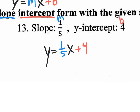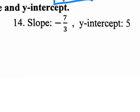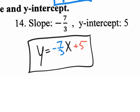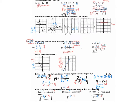Another example: y equals one-fifth x plus 4 — your m is slope, your b is your y-intercept, so you just plug in the m and the b. Let's move on to number 14. This equation will be y equals negative seven-thirds x plus 5. You see? It's easy. That's the front page of the practice test. We've already done more than half of the test. Let's move on to the back page.